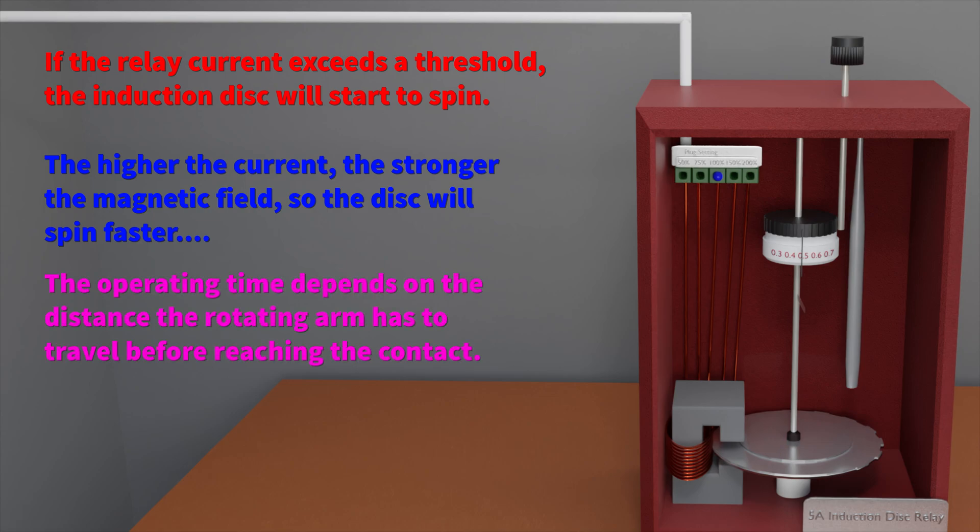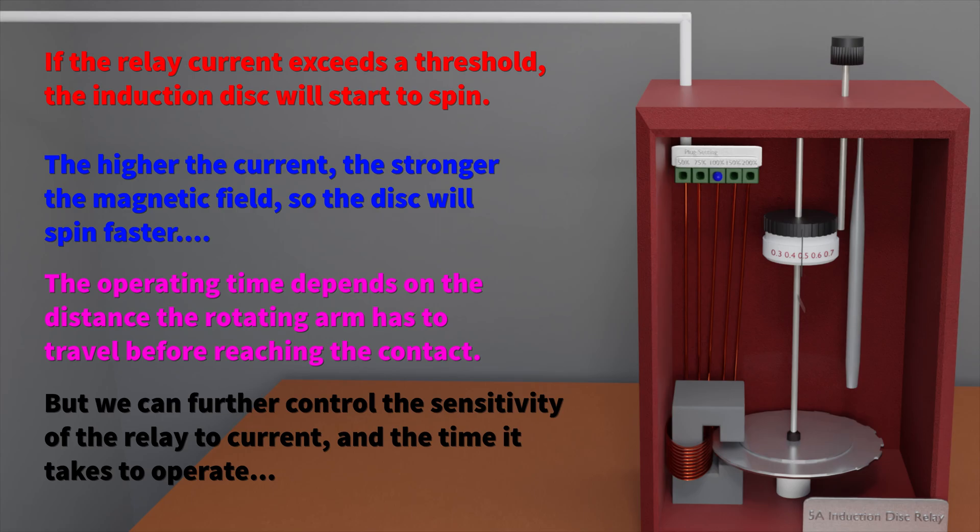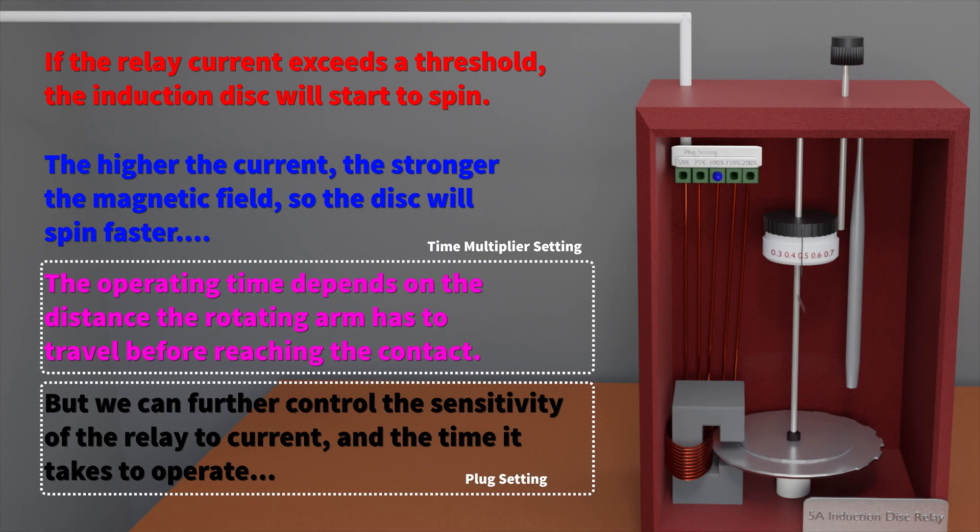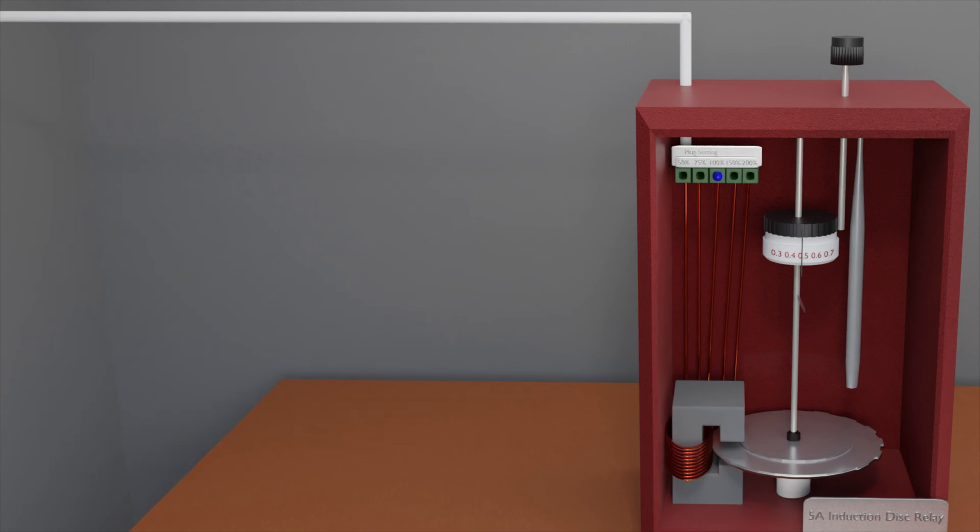We also note that the operating time depends on the distance the rotating arm needs to travel. And we also note that the sensitivity of the relay to current can actually be changed. These final two points are really important because they allow us to configure the relay to suit a particular set of requirements as we'll see.